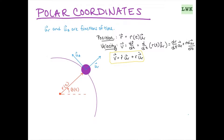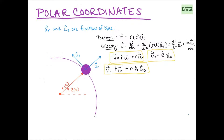We know that u-sub-r-dot equals theta-dot times u-sub-theta. We're not going to derive this, but it's an equation we need to know. So plugging that in, our final velocity expression becomes v equals r-dot times u-sub-r plus r times theta-dot times u-sub-theta. This gives us our r-component and our theta-component of velocity.